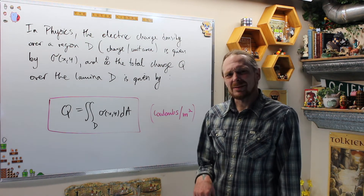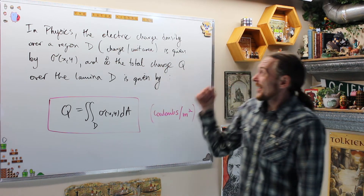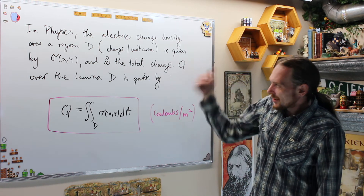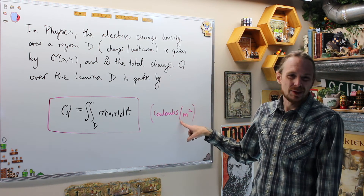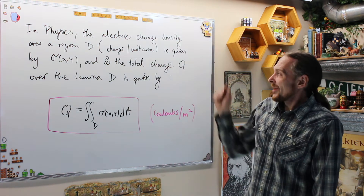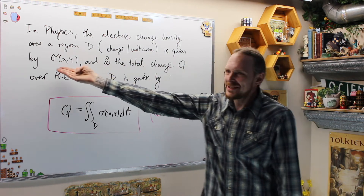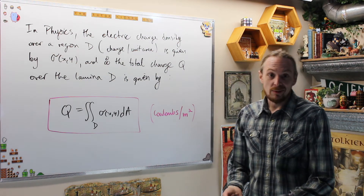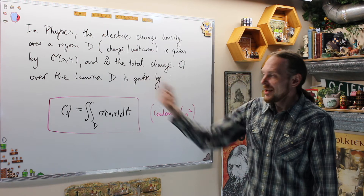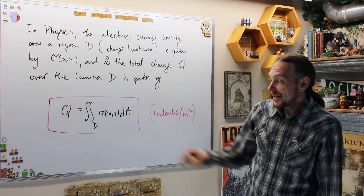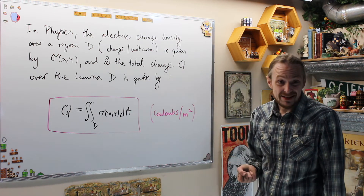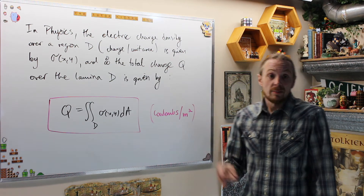We have density — normally we're talking about mass density, but we can also talk about charge density in physics. The electric charge density over a planar region is in charge per unit area, usually coulombs per meter squared. We're mathematicians so we won't worry about units — we just change ρ to σ. So instead of mass density ρ(x,y), the charge density is σ(x,y), and the total charge Q over a lamina D in the plane is the double integral of the electric charge density function over that region.